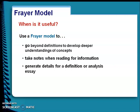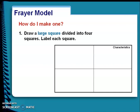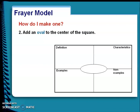Now, how do I make one? For understanding the Frayer model, we have four components. First, draw a large square divided into four squares. Label each square as examples, non-examples, characteristics, and definition.